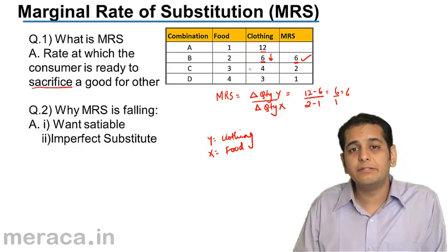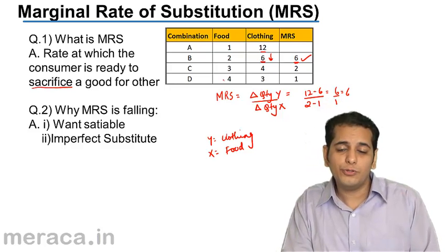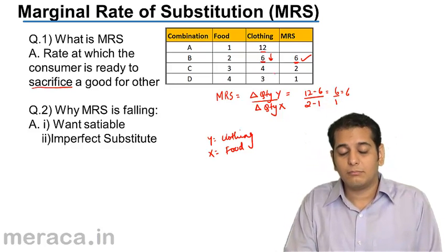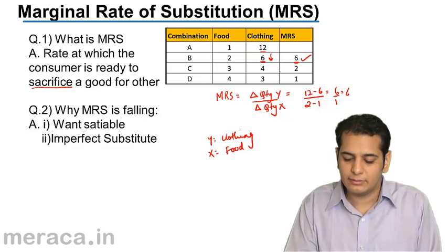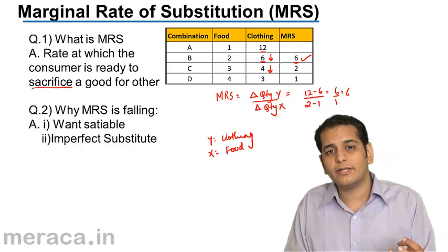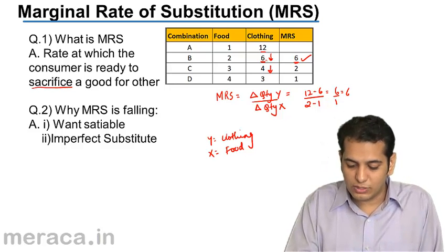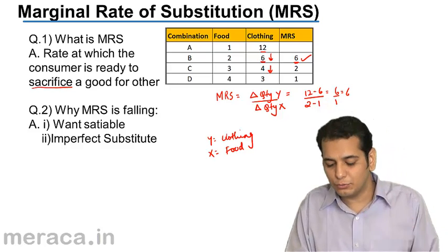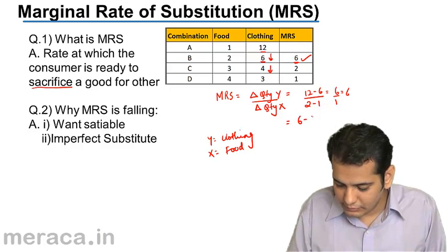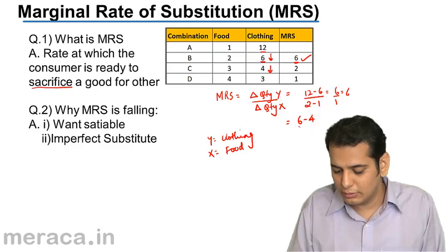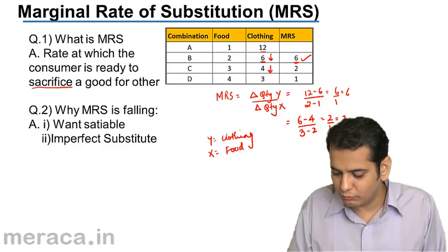At point C, the consumer wants to get one more unit of food. But for that he has to sacrifice 2 units of clothing — that is, his consumption of clothing decreases, going down from 6 to 4. He is sacrificing 2. So at point C, we calculate MRS as 6 minus 4 divided by 3 minus 2. This is 2 by 1, which equals 2.